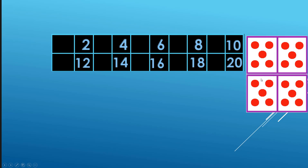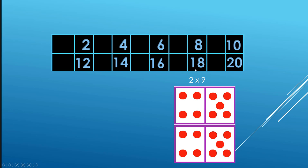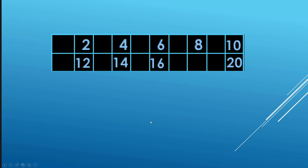Two times ten is twenty. But let's back up one and do that two times nine. Two times nine is eighteen.